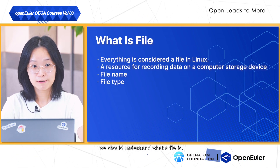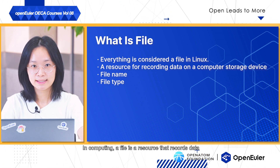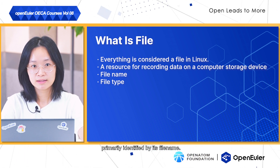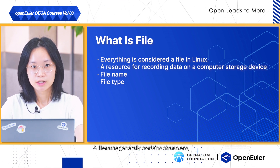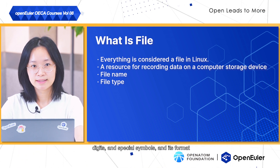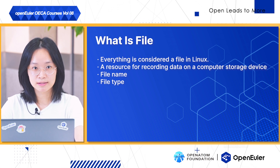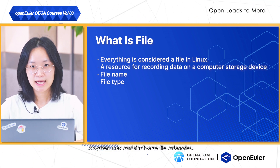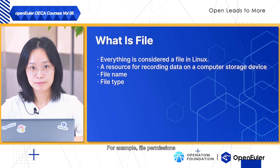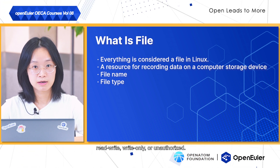Since everything is considered a file in Linux, we should understand what a file is. In computing, a file is a resource that records data on a computer storage device, primarily identified by its file name. A file name generally contains characters, digits, and special symbols, and its format and naming comply with system standards. A system may contain diverse file categories — for example, file permissions are classified into read-only, read-write, write-only, or unauthorized.